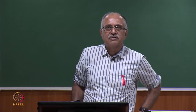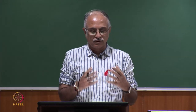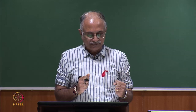The Baker transformation is a transformation of a square onto itself and it loosely resembles the action of a baker kneading dough — or to make a more familiar example, how one mixes dough for chapathis or naan.